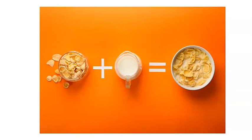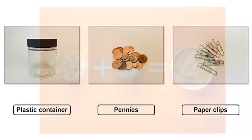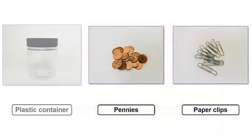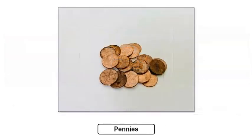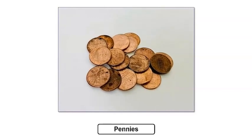Then we can observe the properties of the objects we mix. I have a plastic container, some pennies, and some paper clips. We will mix the pennies and the paper clips together in the container. But first, let's observe the properties of each type of object. What do you notice about the pennies? I notice that the pennies are small and copper-colored. They are also hard and round.